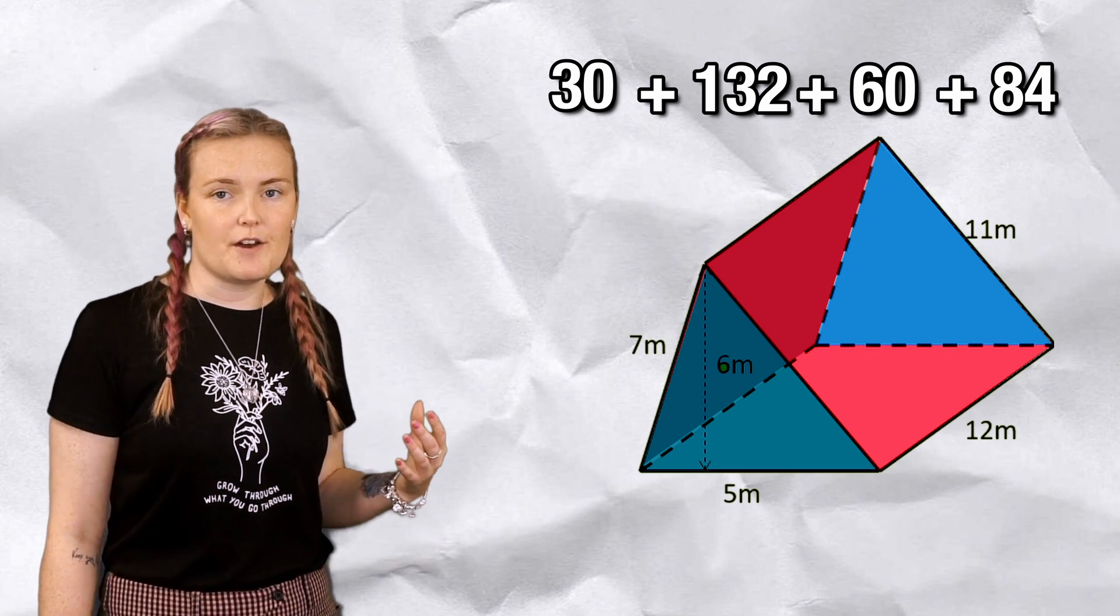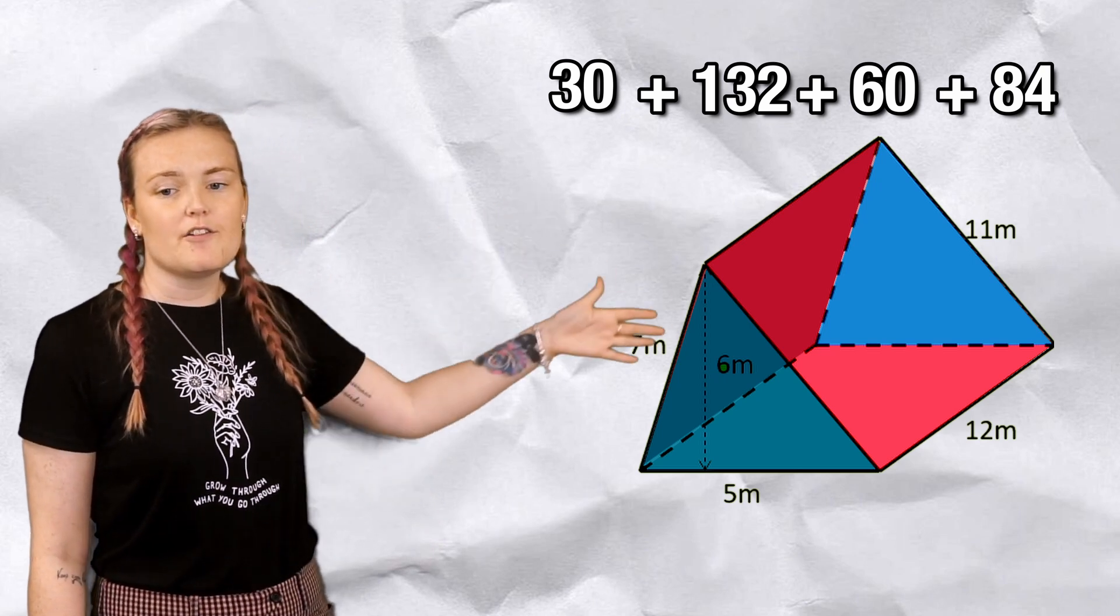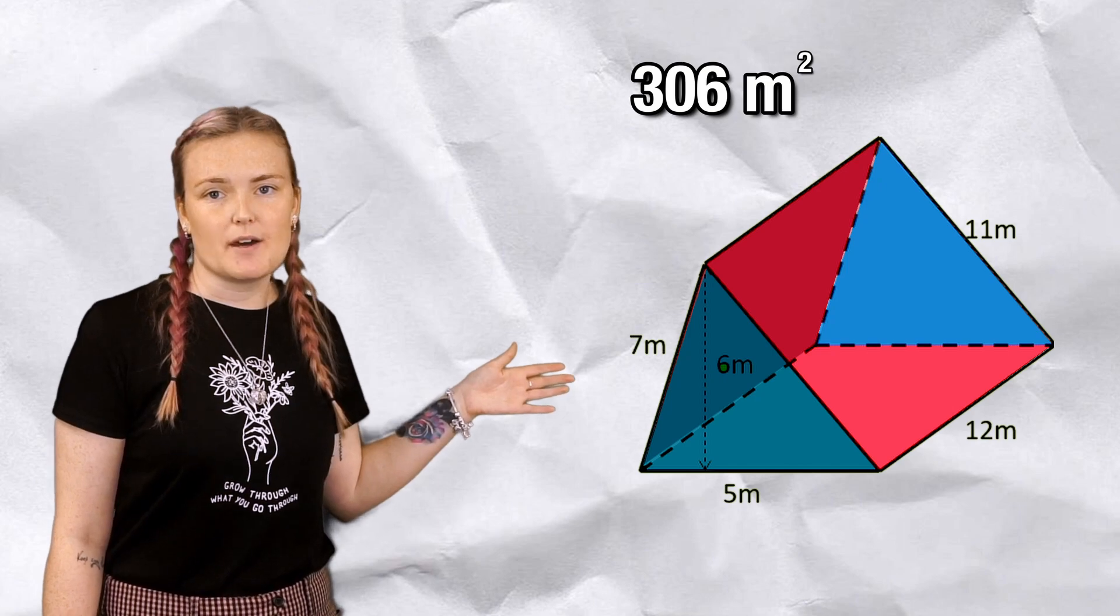If I total all of those together, the surface area of my shape is 306 meters squared. So to recap, finding the surface area of a shape is finding the area of all its faces and adding them together.